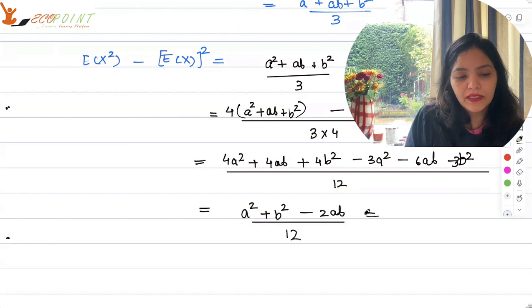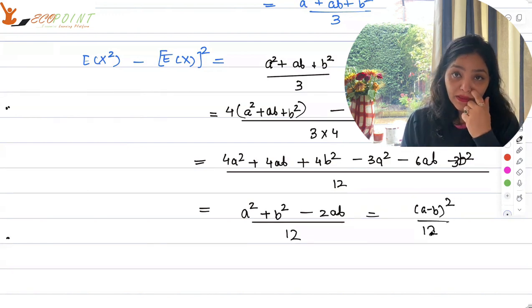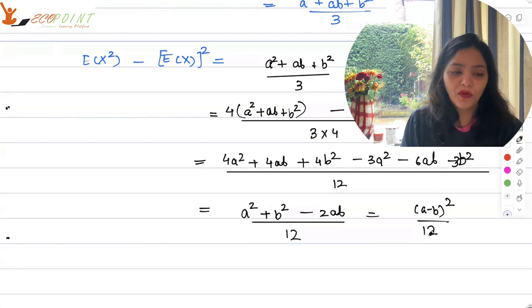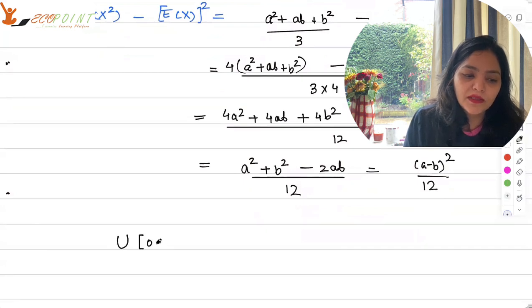So what you basically have is a minus b square upon 12. And that is the variance for a uniform distribution. Very commonly we take uniform distribution in the interval 0, 1.